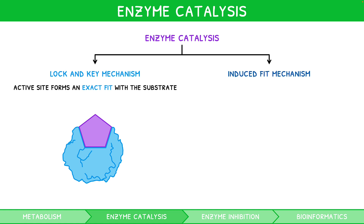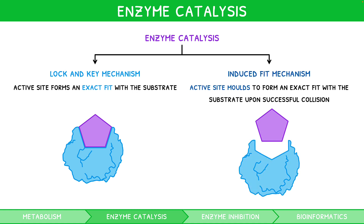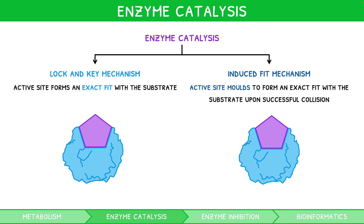The induced fit mechanism states that the enzyme moulds to form an exact fit with the substrate upon successful collision. Continuing our example of a pentagonal substrate, the enzyme may have a hexagonal active site. However, upon binding of the enzyme-substrate complex, the active site would form a pentagonal shape and thus an exact fit. Whilst both mechanisms are viable, the induced fit mechanism is more widely accepted as the correct approach.